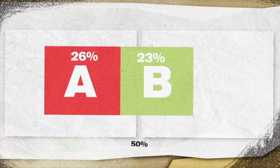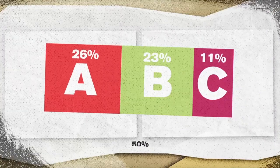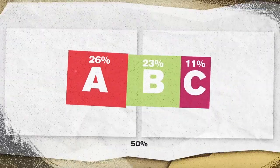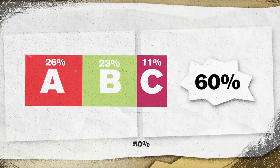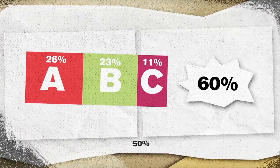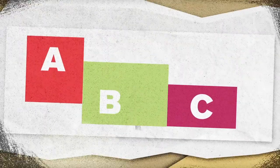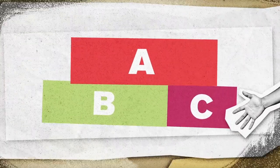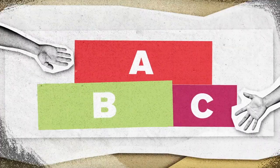If party A receives 26% of the vote, party B receives 23% of the vote, and party C receives 11% of the vote, then they may form the ABC coalition, controlling 60% of the seats in the Bundestag. Within this coalition, there would be one senior coalition partner — party A — and two junior coalition partners, B and C.